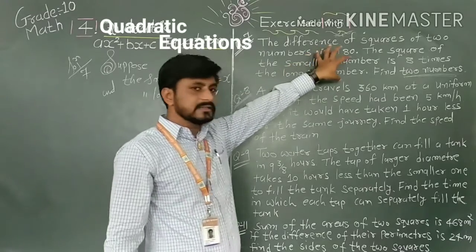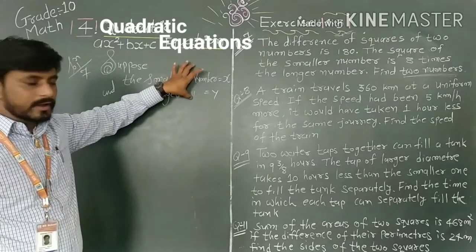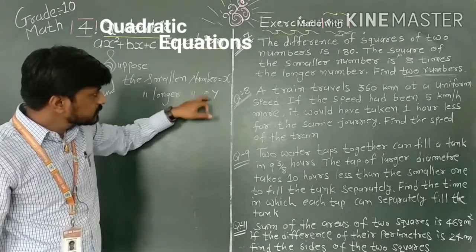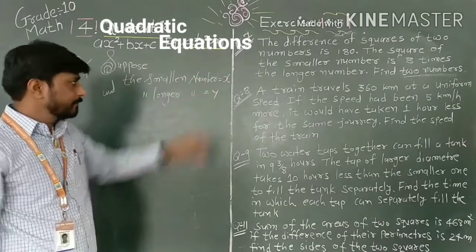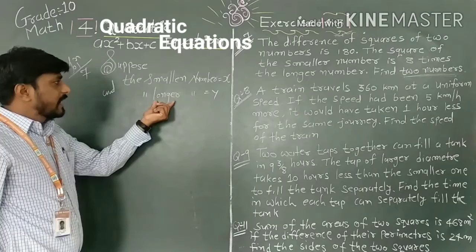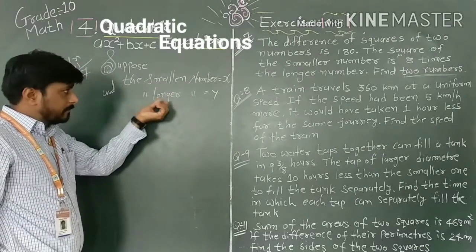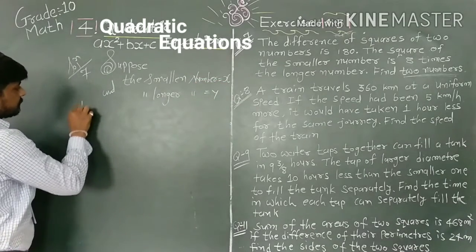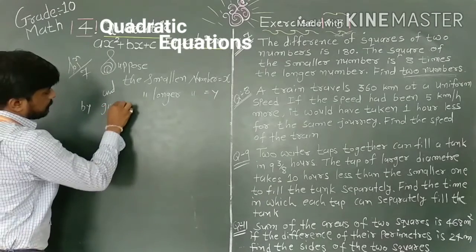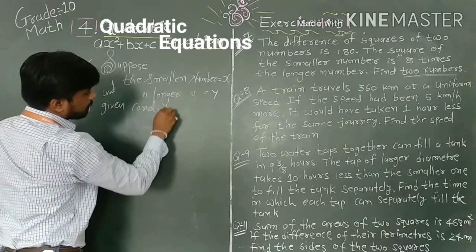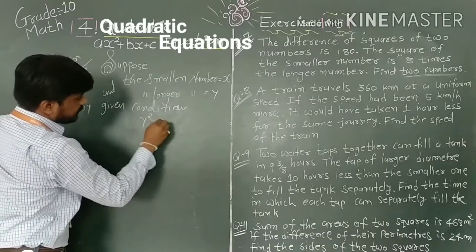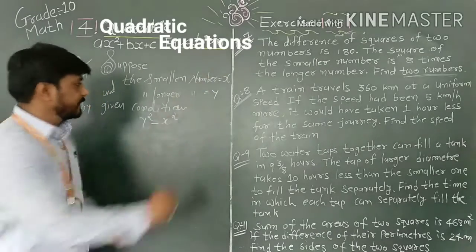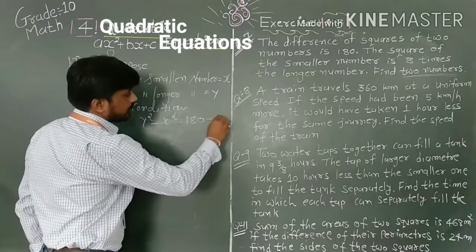Now apply the conditions on these two variables. The difference of their squares means we always subtract the big number minus the small number. By the given condition, y² - x² = 180. This is our equation number 1.